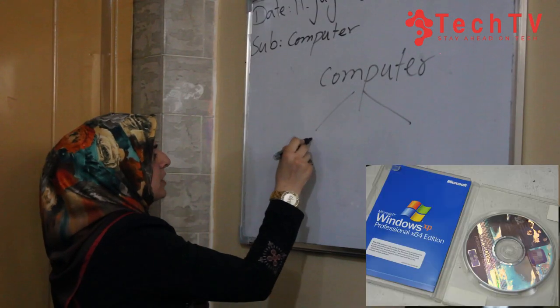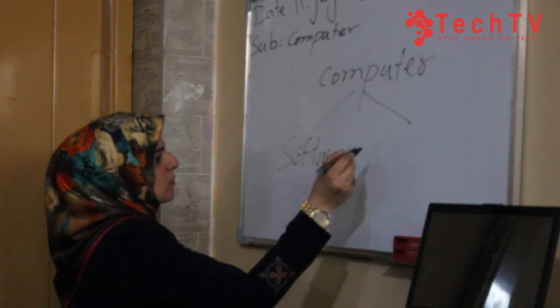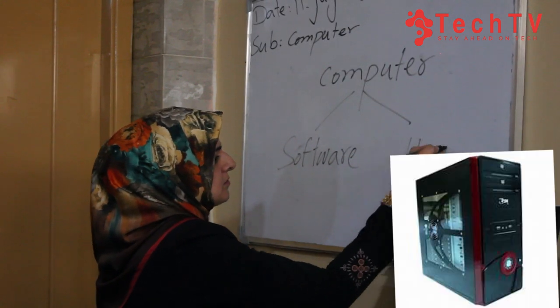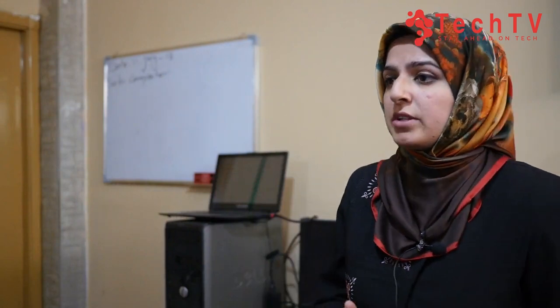A computer has been divided into two parts: one is software, one is hardware. Software are those things in a computer which can be seen — we can't touch it, we can't feel it, we can just see and work on it. Hardware are those things that can be felt and touched. For example, monitors, keyboards, and the mouse — these things are called hardware.